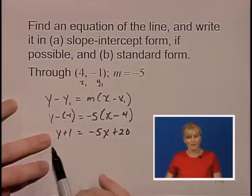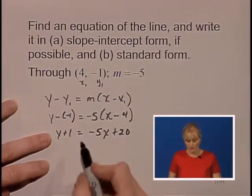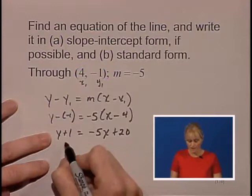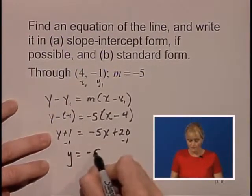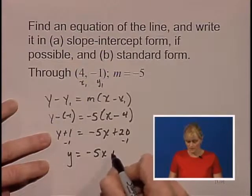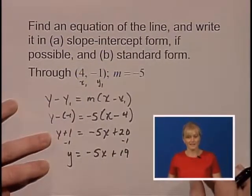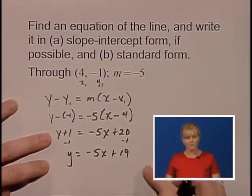Now the slope-intercept form means we have to have y isolated on one side of the equation, so we just subtract 1 from both sides. We'll have y equals negative 5x plus 19. So we've got part A, the slope-intercept form.